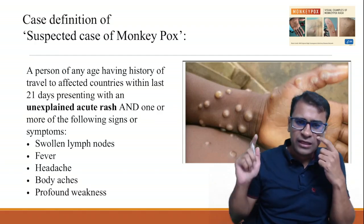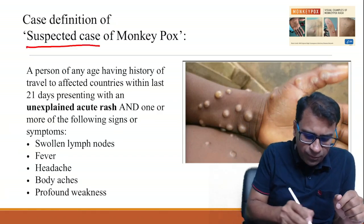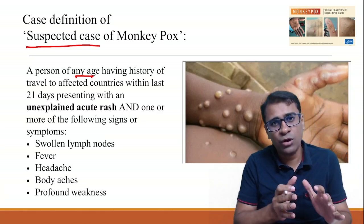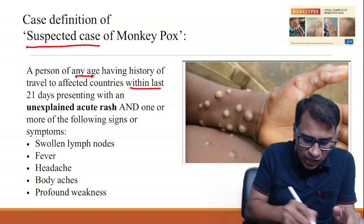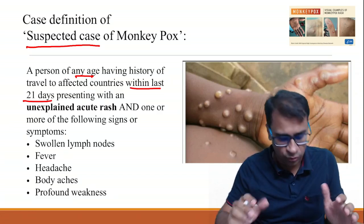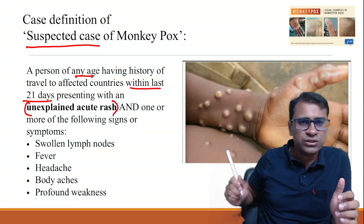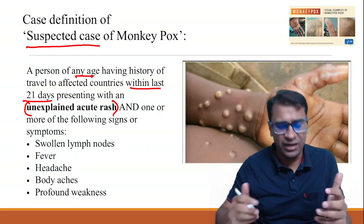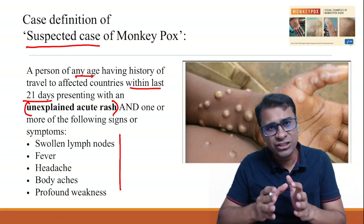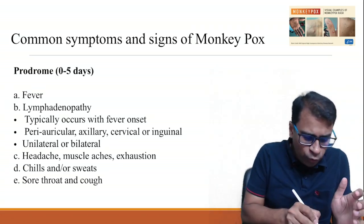The typical lesions, as seen in the image, show what monkeypox looks like. A suspected case of monkeypox would be any person of any age with a travel history to countries where monkeypox cases have been seen, arriving in India within the last 21 days — based on the 21-day incubation period. Alternatively, an unexplained rash along with one of the following symptoms: swollen lymph nodes, fever, body aches, or profound weakness, would also qualify as a suspected case.